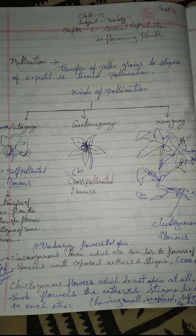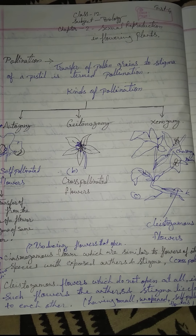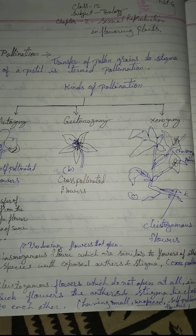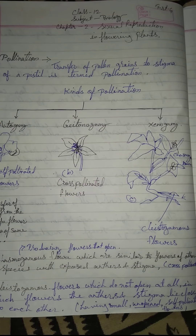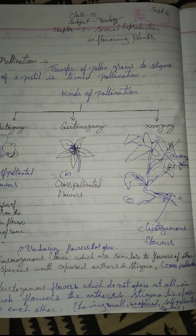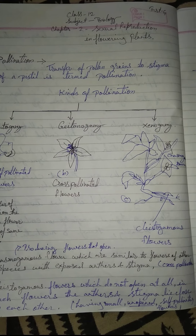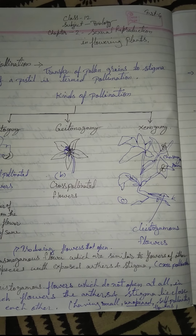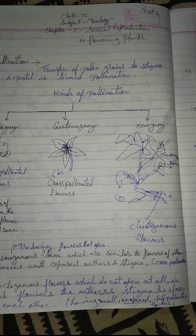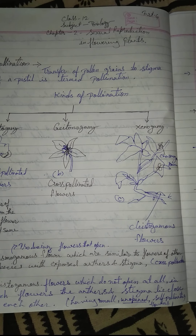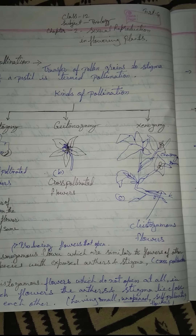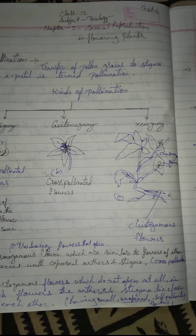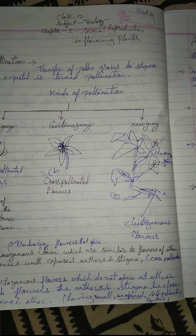The second type is geitonogamy. What do we mean by geitonogamy? Geitonogamy is the transfer of pollen grain from the anther to the stigma of another flower of the same plant. It is called geitonogamy — functional cross-pollination involving a pollinating agent.